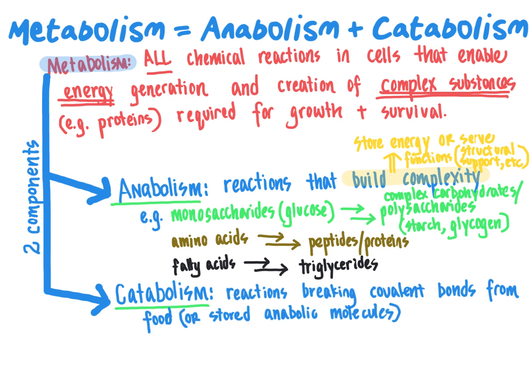Catabolism breaks the covalent bonds stored in those complex carbohydrates, proteins, and lipids to ultimately release energy through a series of complex chemical reactions. So in total, there's a balance between anabolism — to build up complex molecules and store energy — and catabolism, which breaks those molecules down to release energy.